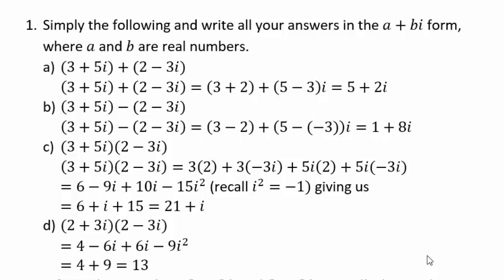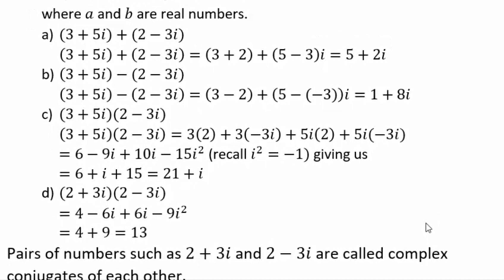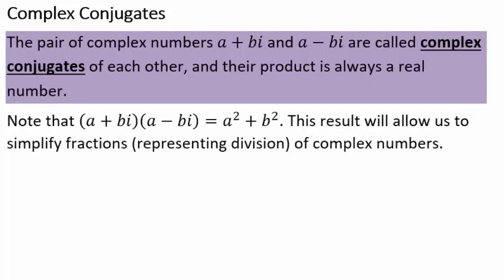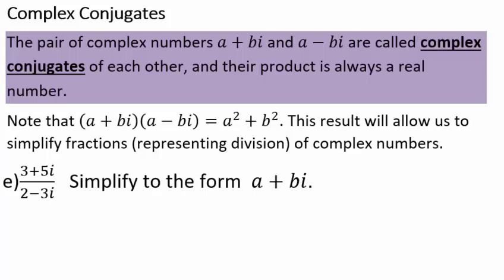When you multiply (2 + 3i)(2 - 3i), notice the imaginary parts -6i + 6i add to 0, and -9i² becomes +9, giving 13 — a real number. These numbers, 2 + 3i and 2 - 3i, are called complex conjugates of each other. Complex conjugates are pairs a + bi and a - bi, and their product is always the real number a² + b².